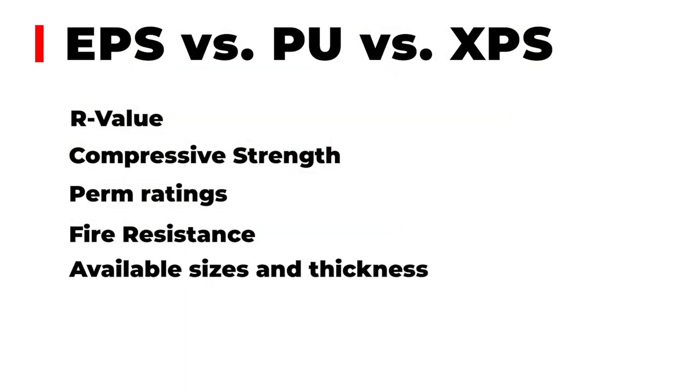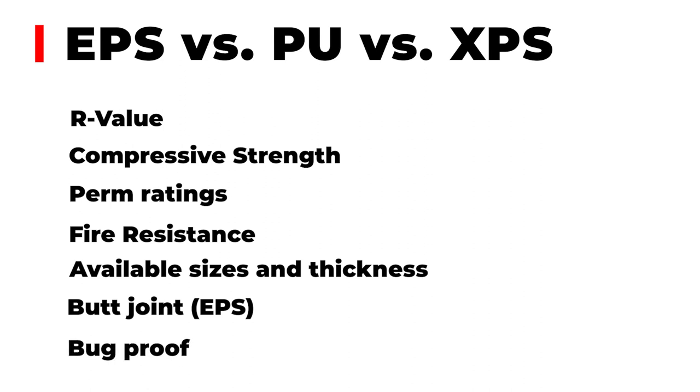Different sizes and thicknesses of EPS are available — up to an 8 by 24 foot panel, and a few polyurethane manufacturers also build jumbo panels. There's also the capacity to provide a treatment to the foam and OSB that enhances resistance to carpenter ants and termites. Depending on where you're building, you can utilize these treatments to prevent that type of problem.